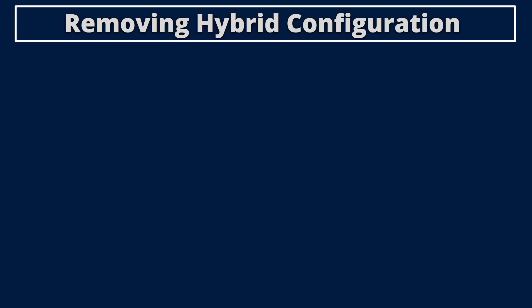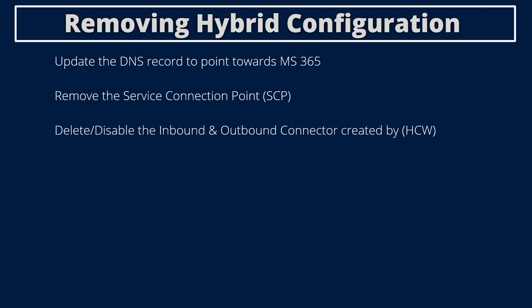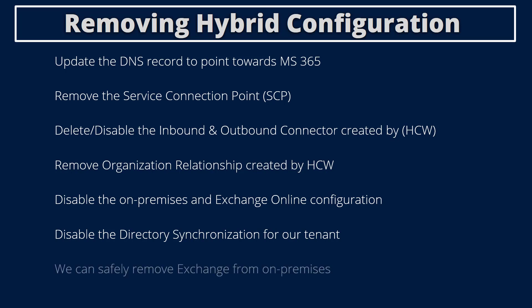In this video we will update the DNS record to point towards Microsoft 365, remove the service connection point from on-premises Exchange, delete or disable the inbound and outbound connectors created by the hybrid configuration wizard, remove the organization relationship created by the hybrid configuration wizard, disable the on-premises and Exchange Online configuration, and disable the directory synchronization for our tenant. Once all these steps are completed, we can safely remove Exchange from on-premises.